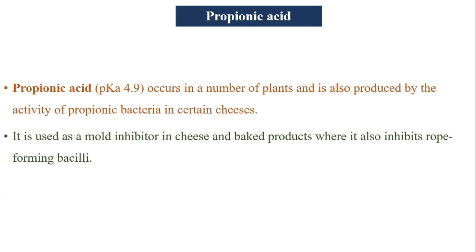Propionic acid has a pKa of 4.9. It occurs in a number of plants and is also produced by the activity of propionic acid bacteria in certain cheeses. It is used as a mold inhibitor in cheese and baked products, where it also inhibits rope-forming Bacillus species.